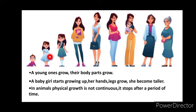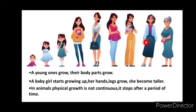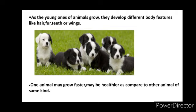As shown in this picture, as a baby girl starts growing up, her hands and legs grow, and she becomes taller. But after a period of time, when adulthood is reached, the body parts stop growing. Thus, in animals, physical growth is not continuous — instead, it stops after a certain period of time.